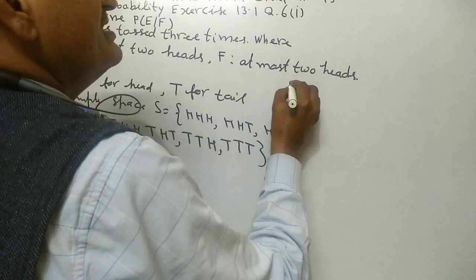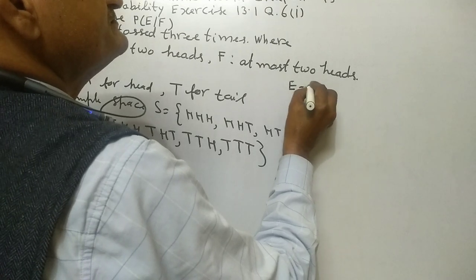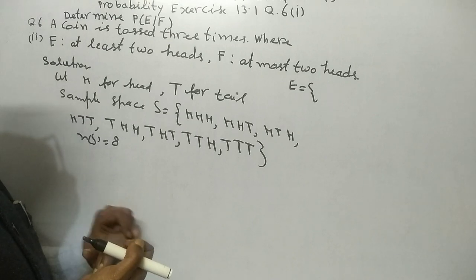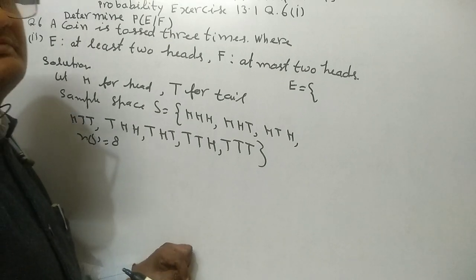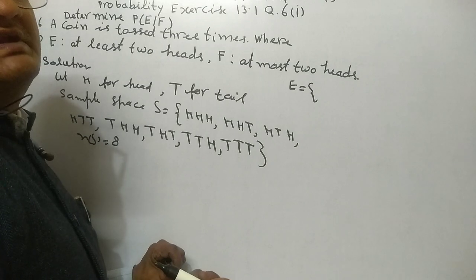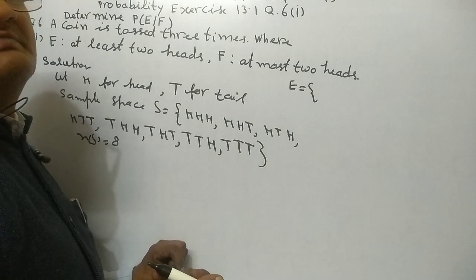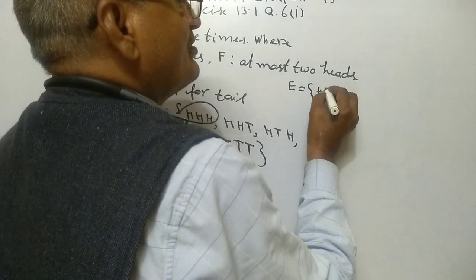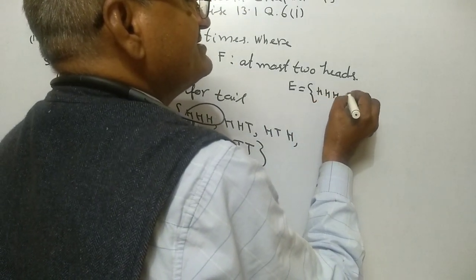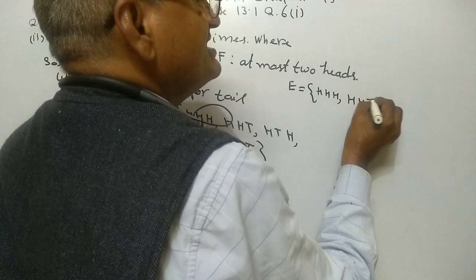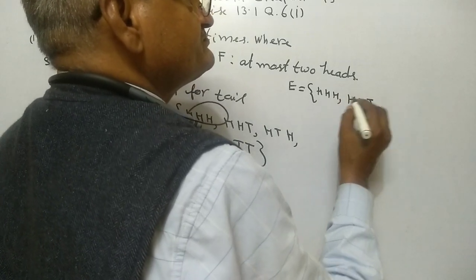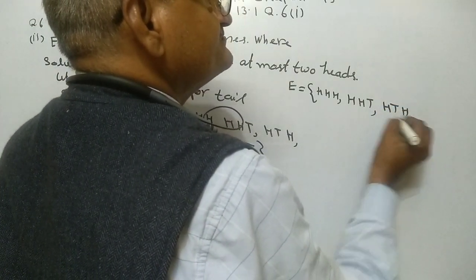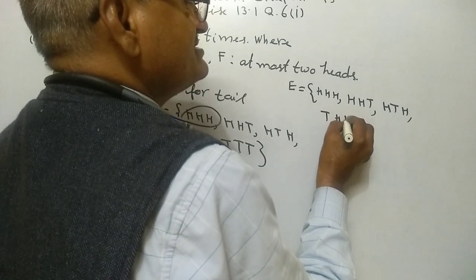Now E equals at least two heads, means minimum two heads and above more than two heads. So HHH, HHT, HTH, THH.